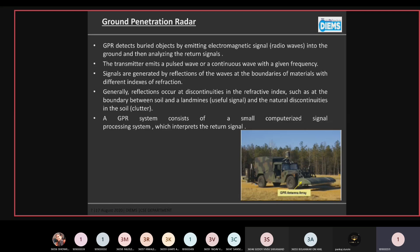GPR technology, which is Ground Penetration Radar. Ground penetration radar detects buried landmines by emitting electromagnetic signals or radio waves of frequency 250 megahertz to 2.3 gigahertz into the ground and then analyzing the returning signals. The transmitter emits a pulse wave or continuous wave with a given frequency.